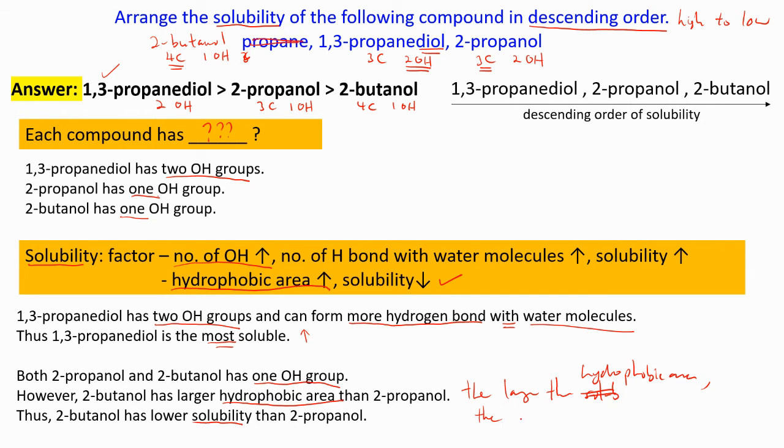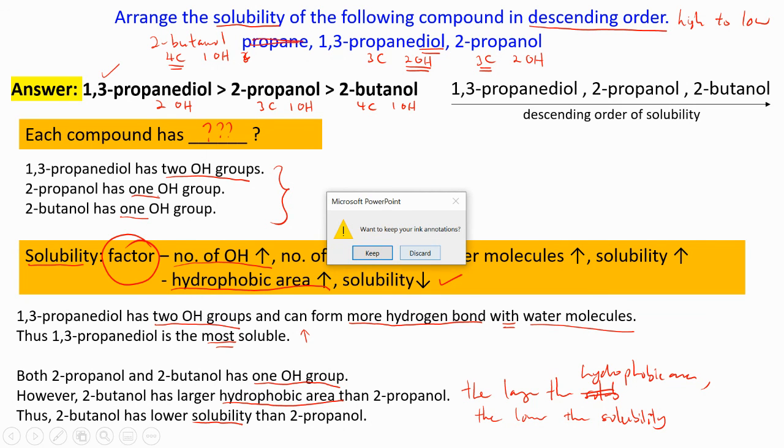So remember to explain physical properties - either boiling points, acidity, or basicity - remember to explain each compound, and then the second part only you explain about the factor. That's all for this part.